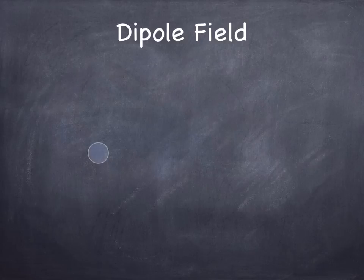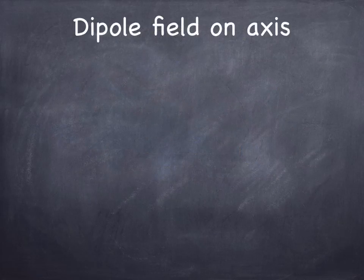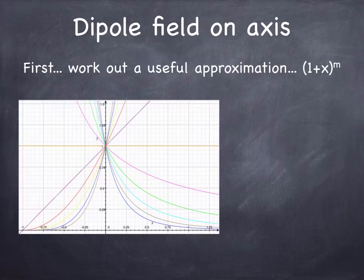And a dipole field is two charges of opposite sign separated by some distance. And the field pattern produced by a dipole looks a little bit like that. Now, what I want to do now is to compute the field produced by a dipole on the axis. And in order to work that out, I wanted to get an approximation for an algebraic. So we'll take a little aside here and do an algebraic exercise to approximate 1 plus x to the m when x is small compared to 1.